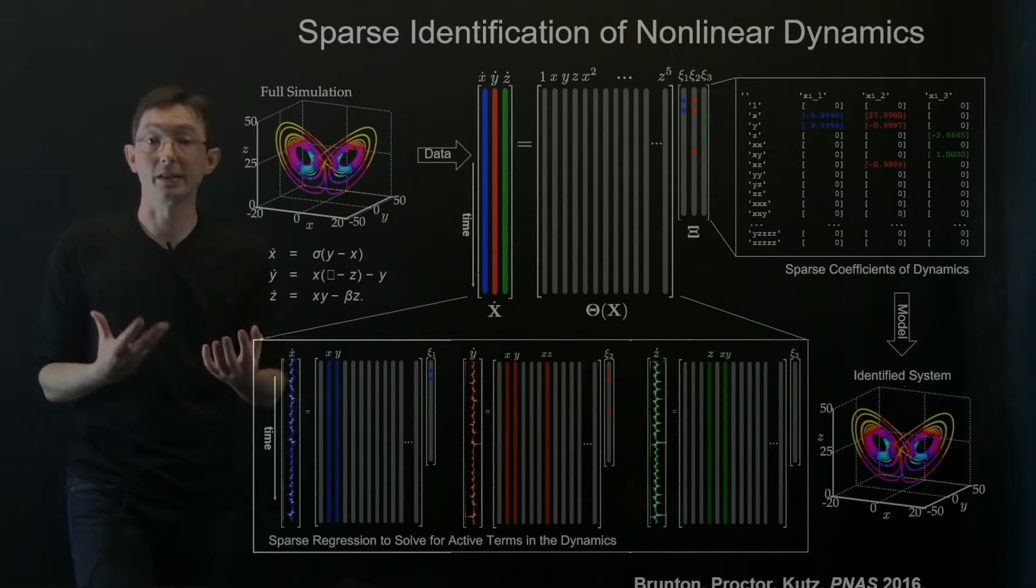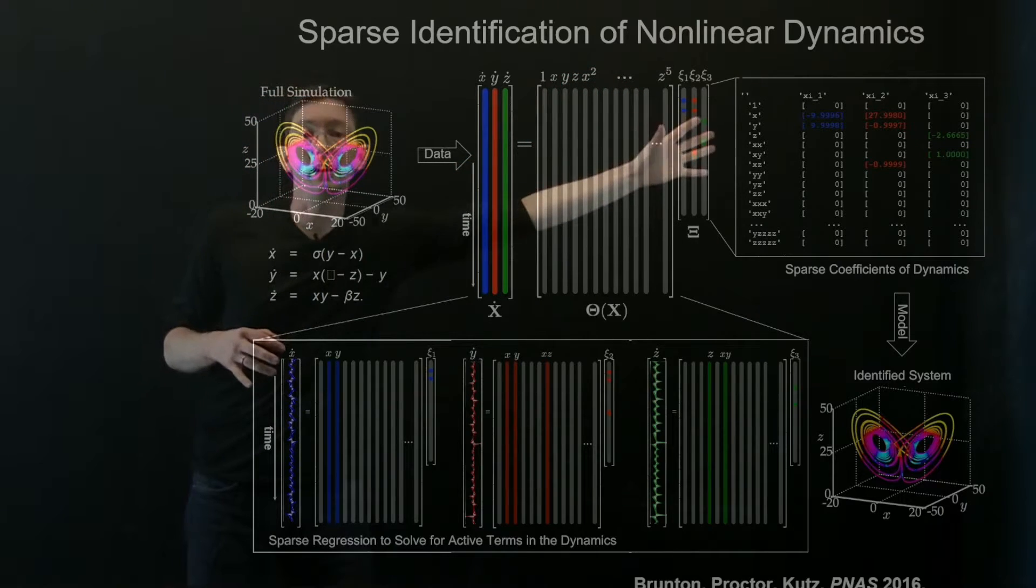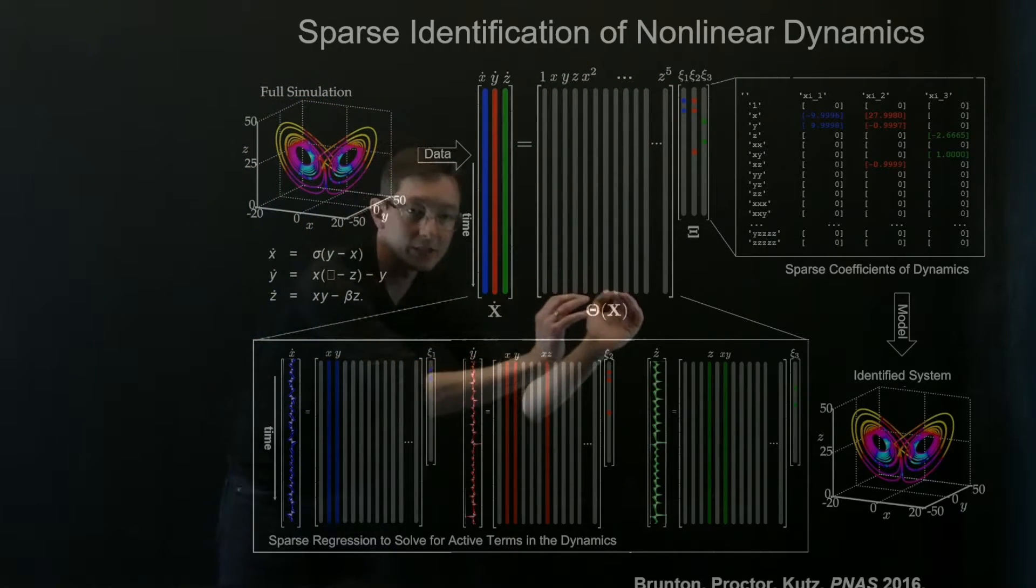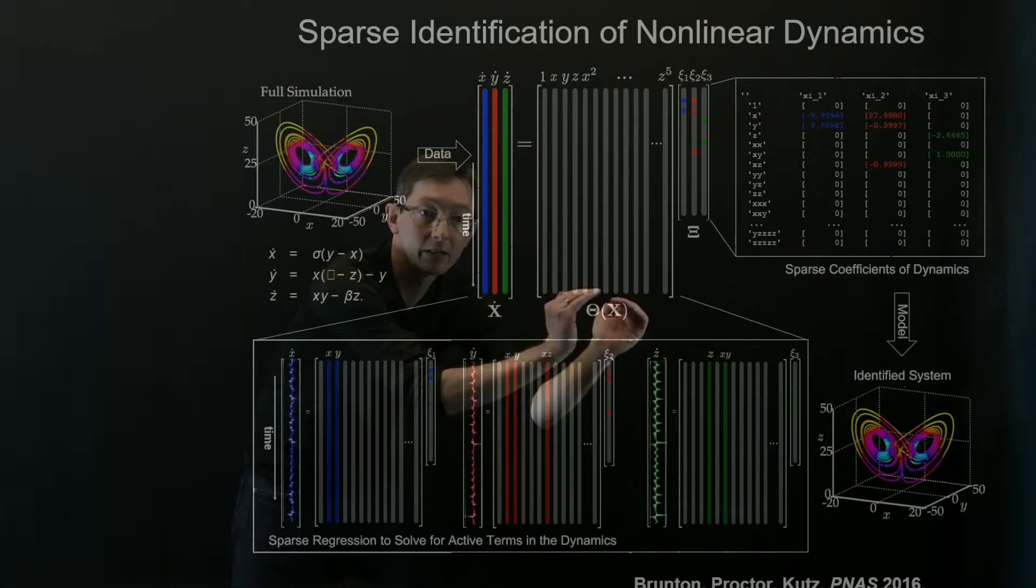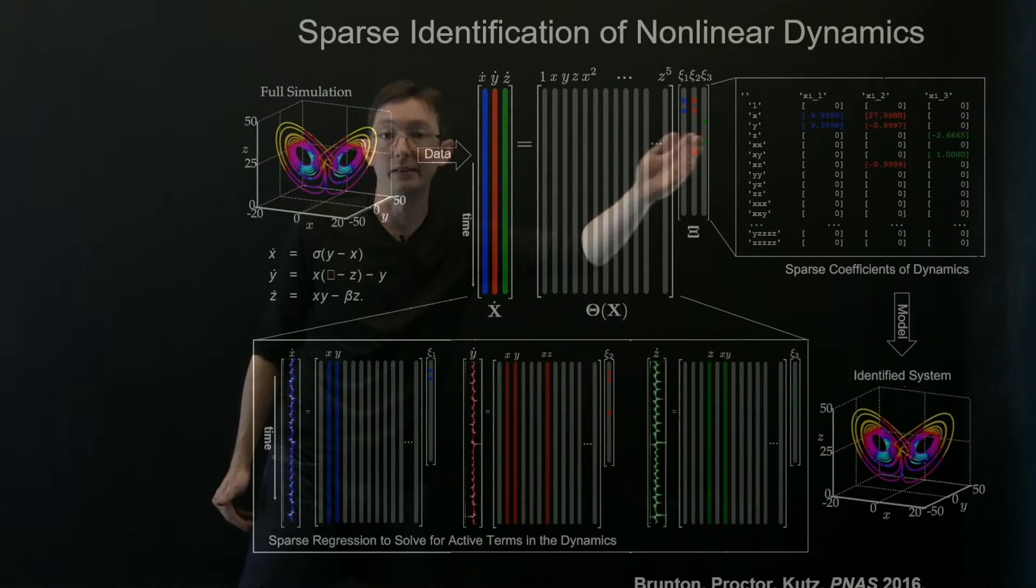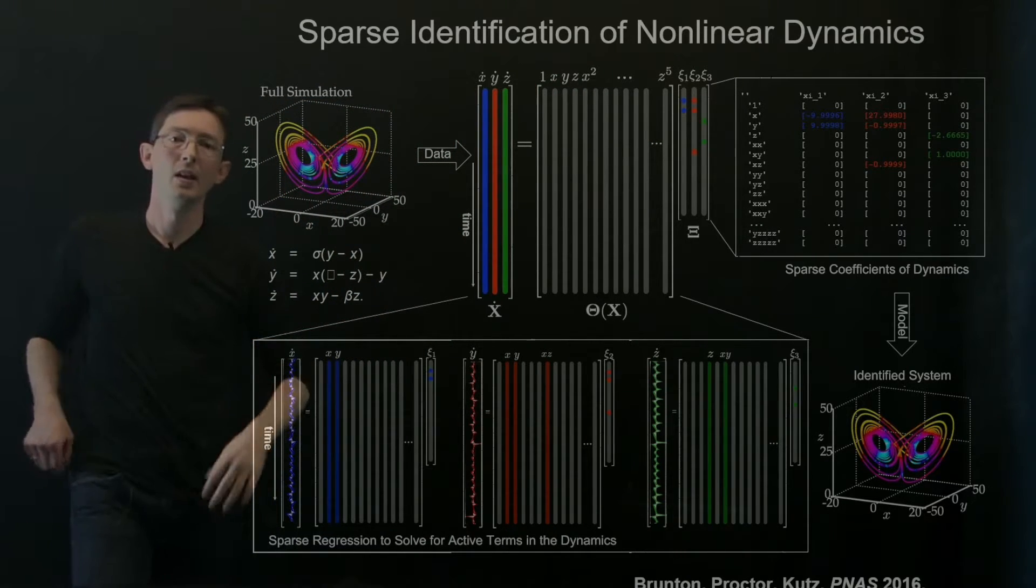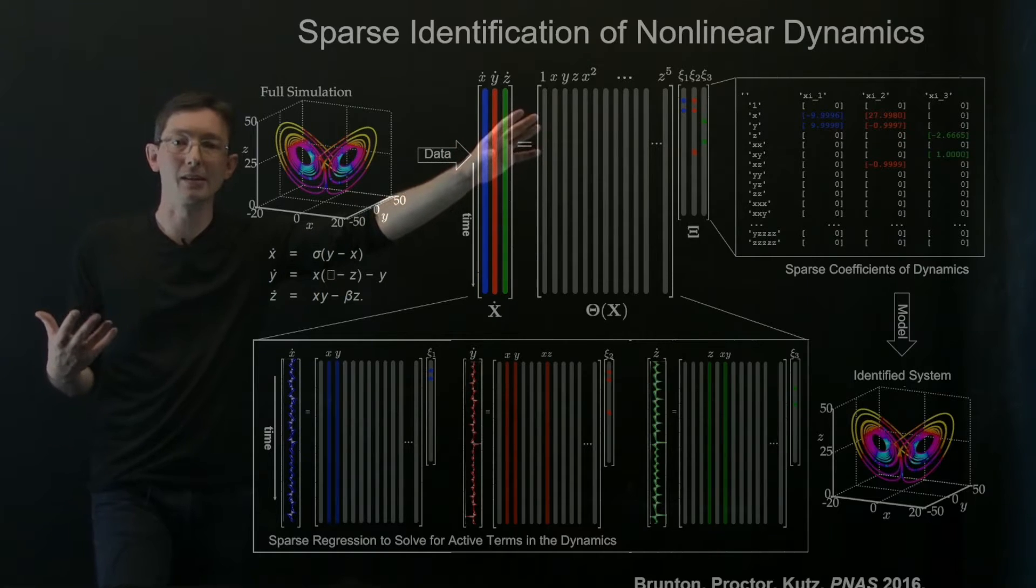It's formulated as a linear regression problem. So we essentially build all of the nonlinearity into this theta matrix and then we do sparsity regularized linear regression to find the fewest columns that agree with x dot, y dot, and z dot. So this is really just a big Ax equals b solve once we've built this library.